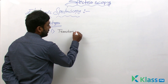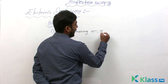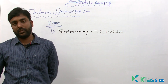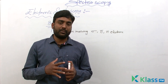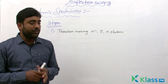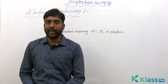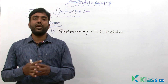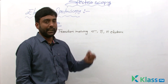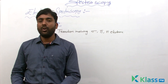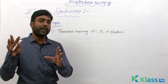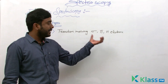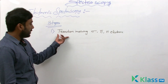The first type is transition involving sigma, pi, and n electrons. If a transition occurs from ground state to excited state in which sigma electrons — those forming sigma bonds — pi electrons — those responsible for pi bond formation — or n (non-bonding) electrons — those not involved in bond formation — are participating, that falls in the first category.